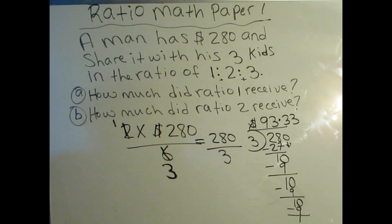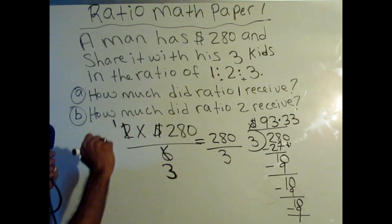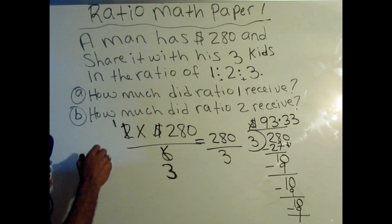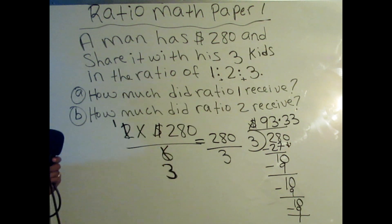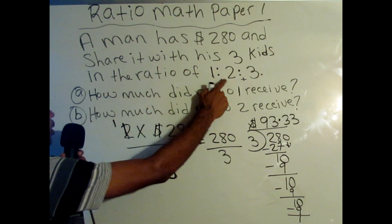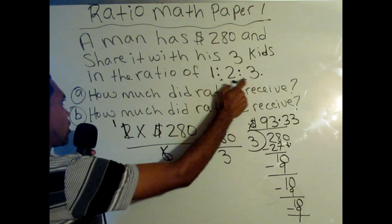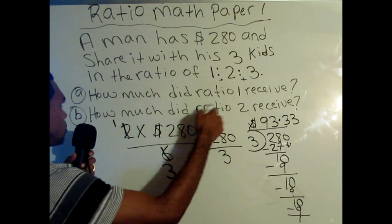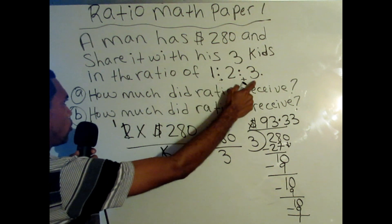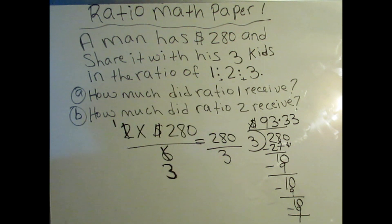If you wanted to find ratio 3, you would do the same: 3 times 280 divided by 6, where 6 is your total ratio. Remember, your total ratio can change depending on how the person is sharing — sometimes it's 4 to 5 to 6, but in this case it's 1 to 2 to 3, giving us 6 as our total ratio. Remember, you can subscribe for more videos. Thanks for viewing, and share with a person that is in Standard 6.